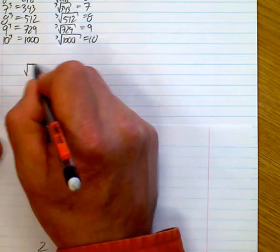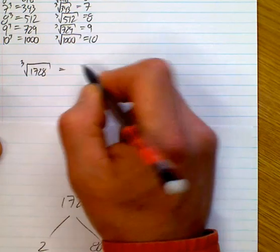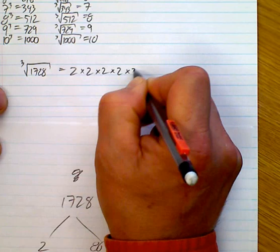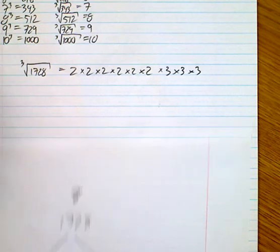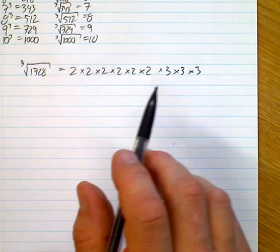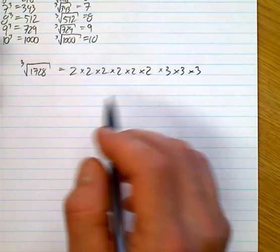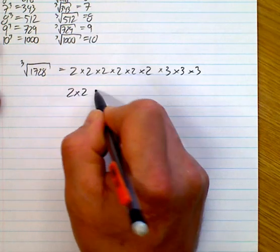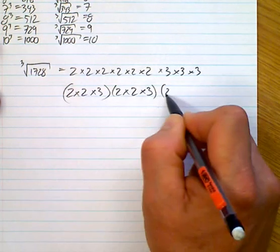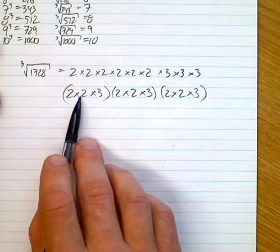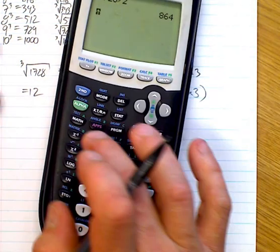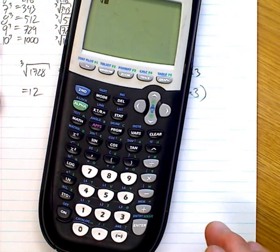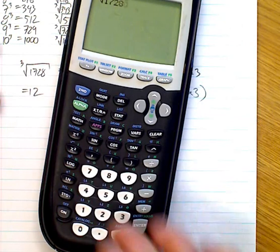The cube root of 1728 has six 2s and three 3s. With cube roots we're making three equal groups — just like with square roots we made two groups. You can take two 2s and a three in each of three groups. 2 times 2 is 4, times 3 is 12. So the cube root of 1728 is 12. Let me check — yes, we got it.